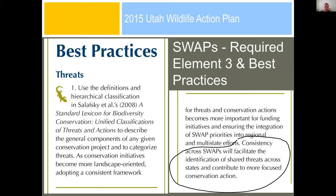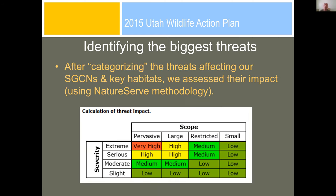If you open up the best practices document to the threats section, you can use a standard lexicon. I've circled this bit: consistency across the SWAPs will facilitate identifying shared threats across states and contribute to more focused conservation actions. The point of this talk is to generalize that — not only across states but within a state, across organizations within an agency, among agencies, and among organizations.